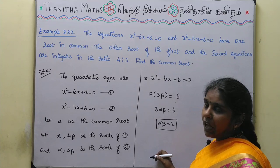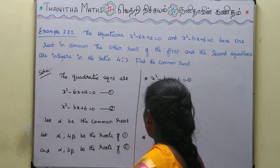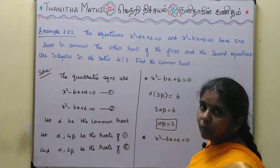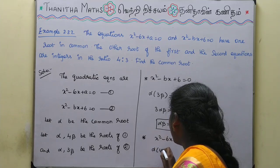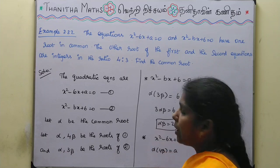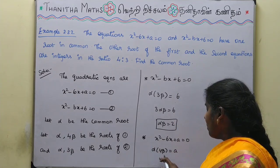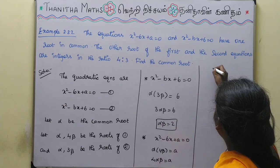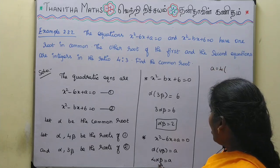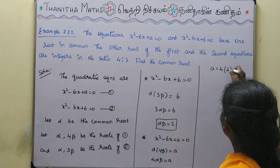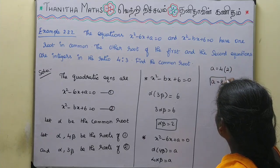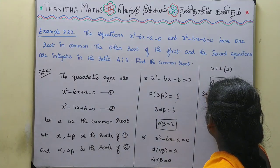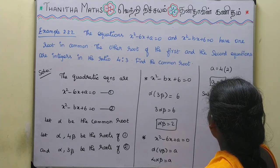Now for the first equation, x squared minus 6x plus a equals 0. The product of roots is alpha times 4 beta equals a. So 4 times alpha beta equals a. Since alpha beta equals 2, we get a equals 4 times 2, so a equals 8.